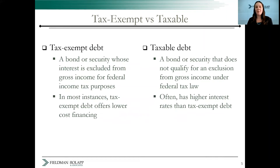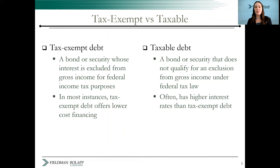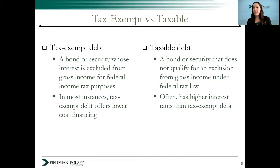Depending on the type of refunding, the debt issued may be restricted to be either tax-exempt or taxable. For bondholders, interest on a tax-exempt bond is excluded from gross income for federal income tax purposes. Because of this, investors agree to lower interest rates. On the other hand, interest on taxable bonds is not excluded from federal income tax and will often have higher interest rates as compared to tax-exempt debt.